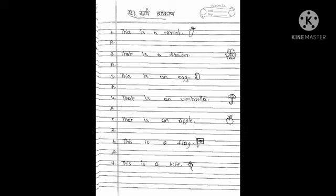All the sentences are almost the same — just 'this' and 'that' will change, and the object — carrot, flower, egg — that will change. That is an umbrella. Umbrella ko Hindi mein kya kahate hai? Chata ya chhatri. That ko Hindi mein kya kahate hai? Aap likhiye. Umbrella ko Hindi mein chata kahate hai — chha, ta, chata. Write that sentence.